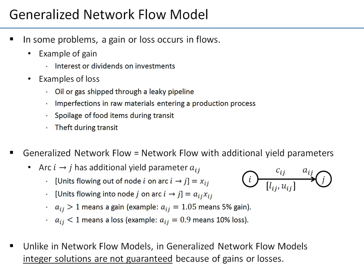One important note: in generalized network flows, we no longer have the guarantee of integer optimal solutions. Because of these gains and losses, it is very easy to create fractions. For example, if five units flow on an arc with a yield of 90%, five times 0.9 gives four and a half units arriving — and immediately fractions appear in the solution. It is therefore unusual to have generalized network flow models with integer solutions, and we should not expect integer solutions here normally.